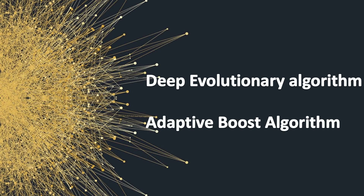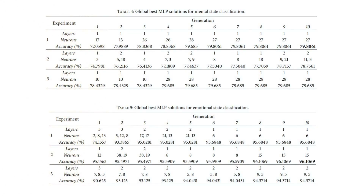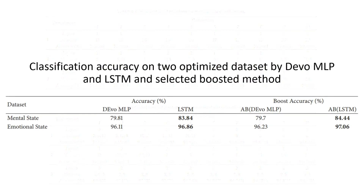Here are some of the classification results of the MLP model. For mental state classification, 79.8061% accuracy was obtained. For emotional state classification, 96.1069% accuracy was obtained. The authors could not apply some algorithms for the LSTM topology because of the necessity of high computational power, and they have received results as represented here.